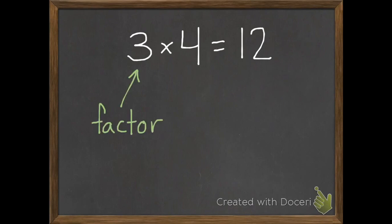First of all, our 3 is a factor, and also our 4 is a factor. So any number we multiply together in a multiplication sentence is a factor. And then the answer to a multiplication problem is called the product. So those are the parts of a multiplication problem or multiplication sentence. Two factors, the answer is a product.